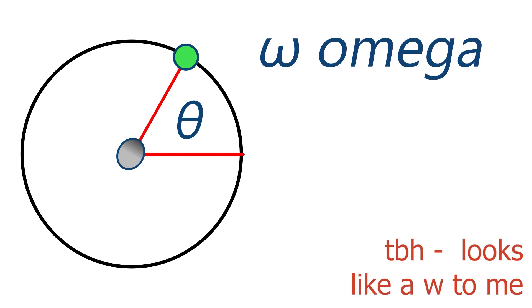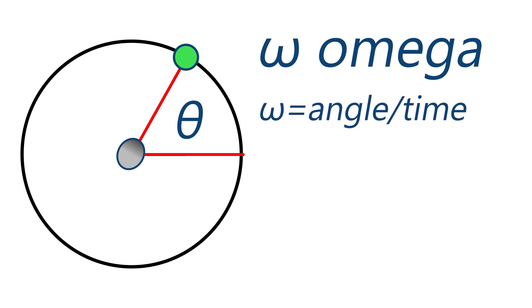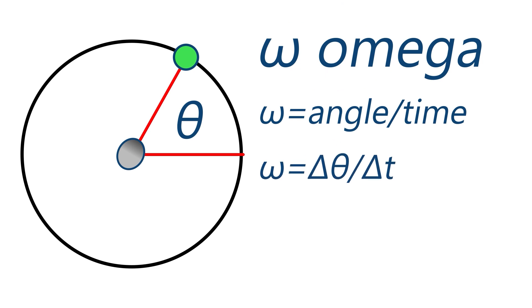This is defined as being the angle rotated through over the time taken or perhaps better still change in the angle over the change in the time. This is normally measured in radians but not always.